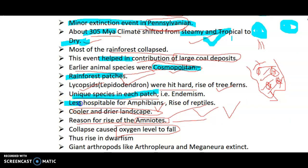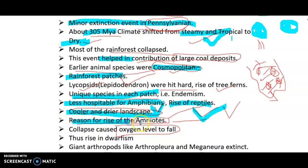The climate became less hospitable for amphibians, which love to live in steamy, tropical environments. Amphibians became almost extinct, and there was a rise of reptiles. Reptiles are accustomed to living in dry environments, and the landscape became cooler and drier. This was one of the main reasons for the rise in amniotes.